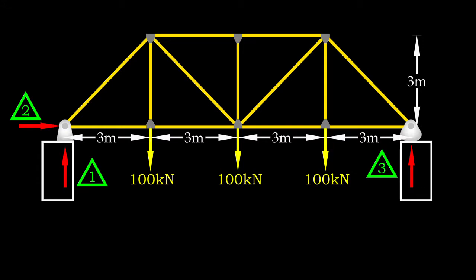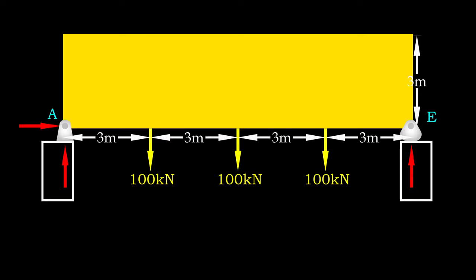Before we start, let's label the joints properly to avoid confusion. Now, let's solve for support reactions. In this stage, we only need to consider the equilibrium of structure. So, we ignore the truss members for now. Cover them up if you must to stop them from distracting us.